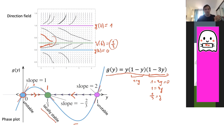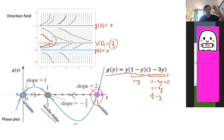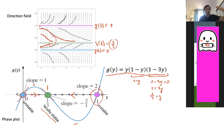Now let's analyze the pink solution y equals 1. Solutions will go away from the constant function one. If you start with a solution a little bit below one, it will go away and asymptotically approach the green function y equals 1/3. The same thing happens when you start above the point one — the solution goes away from the equilibrium solution one. One observation: let's simplify this function g. g(y) equals positive 3y cubed.